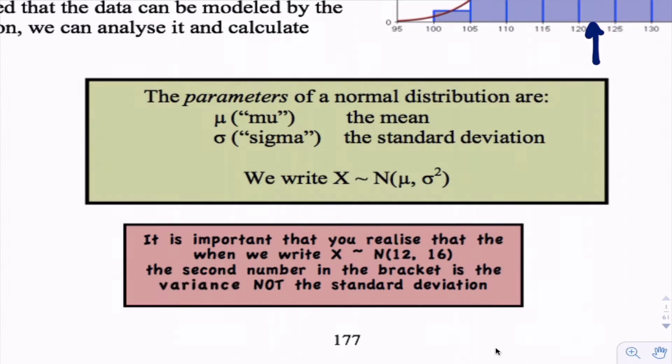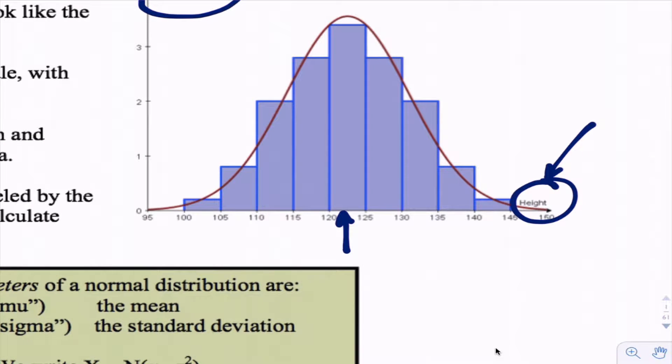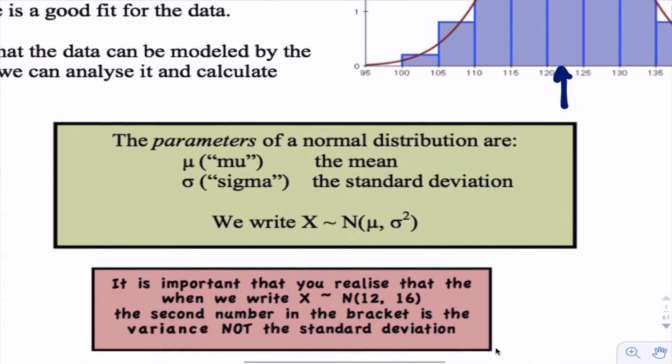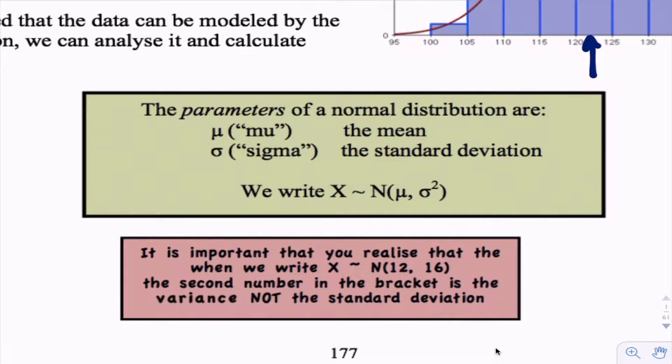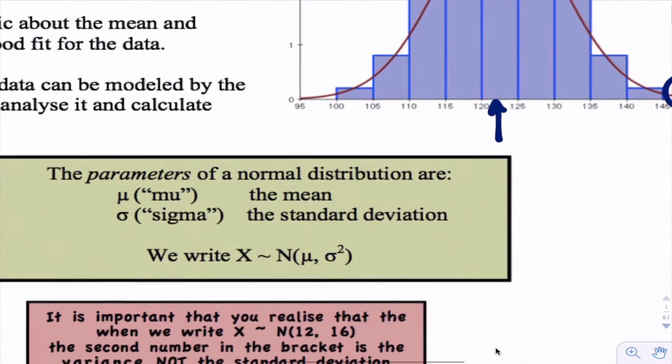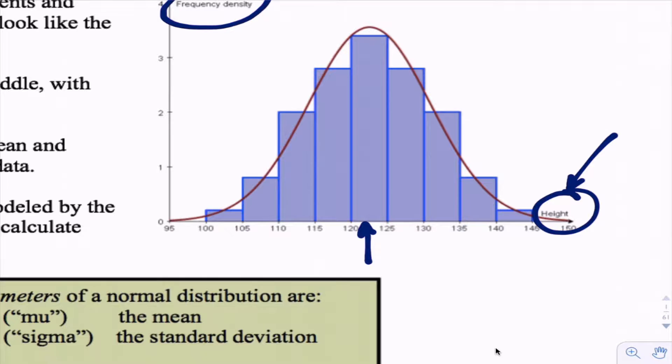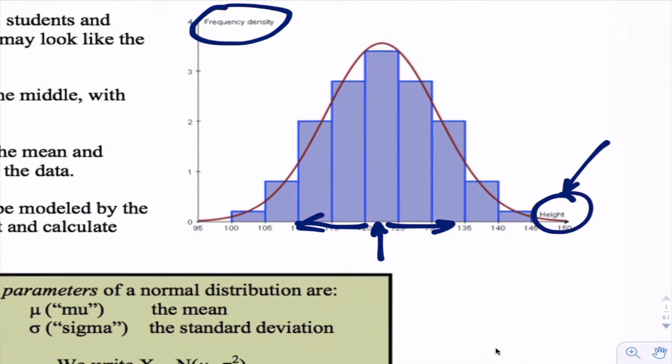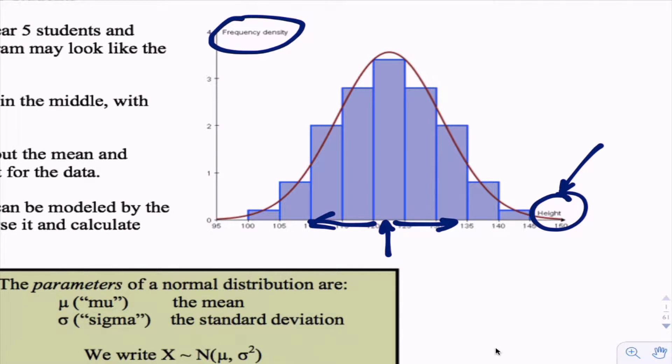The parameters of this distribution: we use two Greek letters. The first one mu (μ), that signifies the mean of the distribution. In this example the mean was around about 122, right in the middle there, and sigma (σ) for the standard deviation. The standard deviation is measuring the spread - how far spread out from the mean are these values.